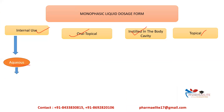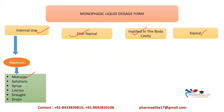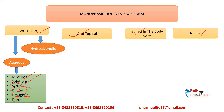For internal use: first, aqueous preparations including mixtures and solutions. Then syrups — the concentration of sucrose is high, osmotic pressure is high, and chances of microbial growth are reduced. Then linctus, which shows a demulcent action — it should be taken without the aid of water, sipped very slowly. Then drops, which are a single-dose preparation. Then hydroalcoholic preparations — elixirs, where alcohol content varies from 3 to 40 percent; they can be medicated or flavored.